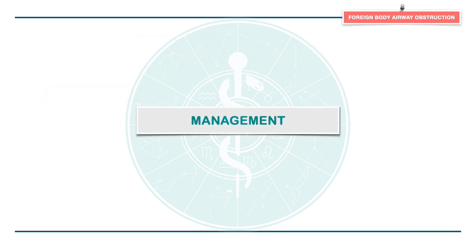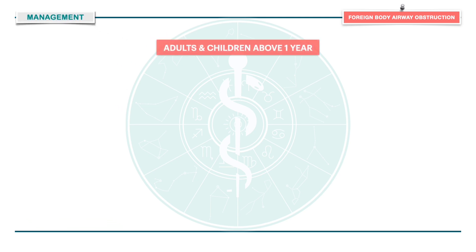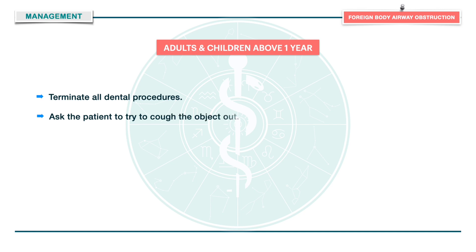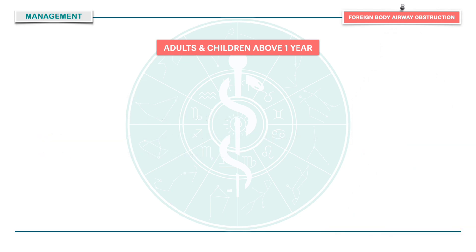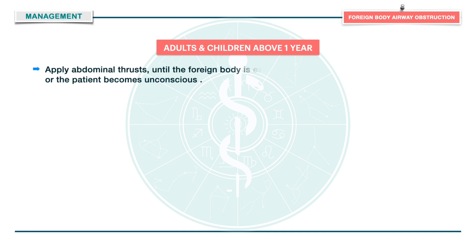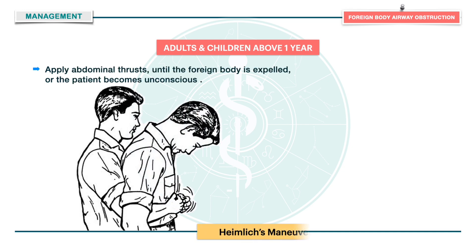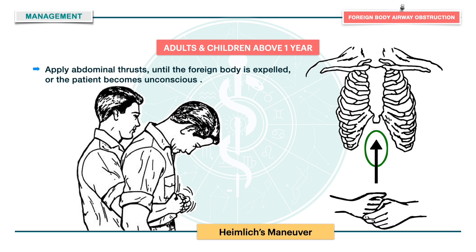Coming to the management in adults and children above one year: terminate all dental procedures and ask the patient to try to cough the object out. Identify complete airway obstruction by the universal sign of choking, that is the patient clutching at the neck. Ask questions like 'Are you choking?' and 'Can I help you?' Apply abdominal thrusts — the Heimlich maneuver — until the foreign body is expelled or the patient becomes unconscious.